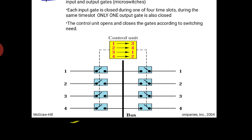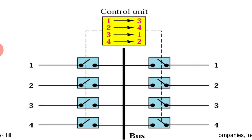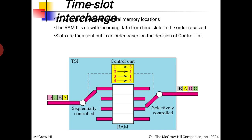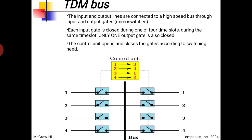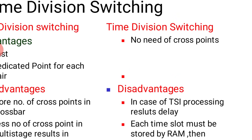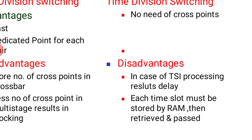Comparing the advantages and disadvantages of time division switching: no crosspoints are required because the maximum job is done with controlling software. Gates are required, but the hardware is less compared to space division switching. The disadvantage is that in TSI, each time slot must be stored in RAM, then retrieved and forwarded — this causes processing delay, which is the main disadvantage of time division switching.